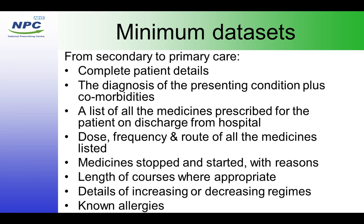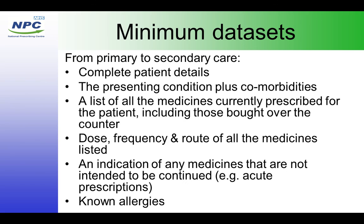These are the minimum data sets — what we're looking for when we reconcile medicines for a patient. Going from secondary to primary care, you want the complete patient details: date of birth, address, full name, diagnosis of presenting condition and comorbidities, list of all medicines prescribed on discharge with dose, frequency, and route. Going from primary to secondary care, the same applies — list all medicines prescribed, don't forget over-the-counter medicines and any herbal medication, and it's always vitally important to communicate known allergies as well.